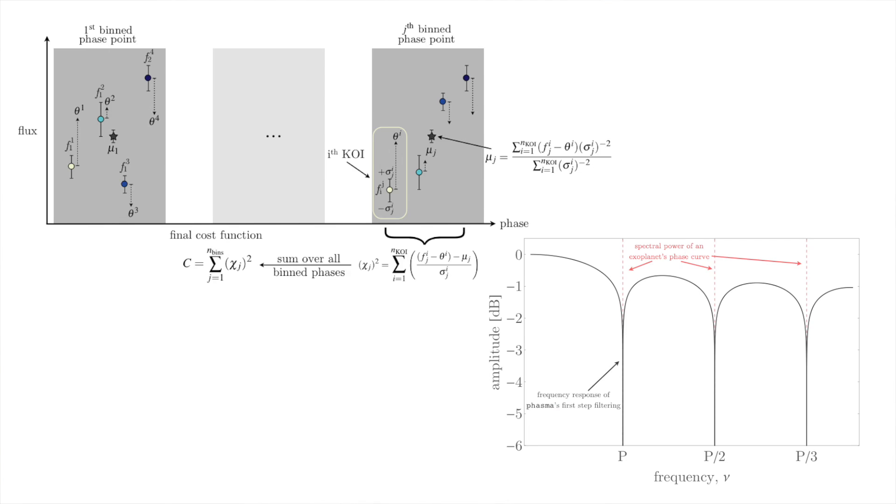This method only works because we know the period of the planet from the transit data. If you're interested in the more technical details, feel free to look at our paper, which I'll link to in the description. After detrending and stacking the phase curves, we then fit a series of phase curve models to the data in order to determine which parameters, like albedo, produce a model that matches the data the best.